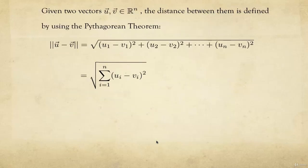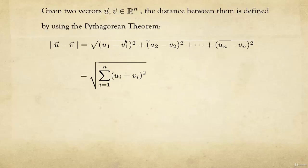Given two vectors u and v in R^n, the distance between them is defined using the generalized Pythagorean theorem. We subtract the two vectors and define the magnitude of that difference — subtracting all components of u and v, squaring them, summing them up, and taking the square root. This is the distance formula for two vectors in R^n, and there's a shorthand notation using summation.